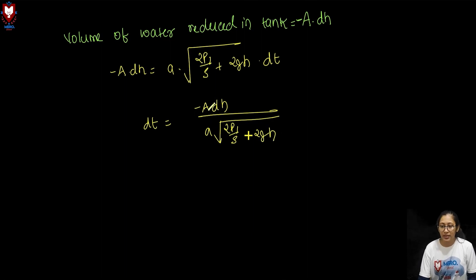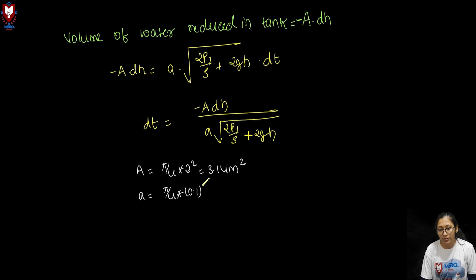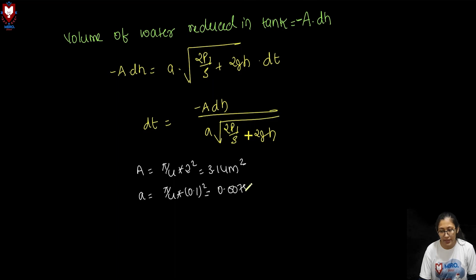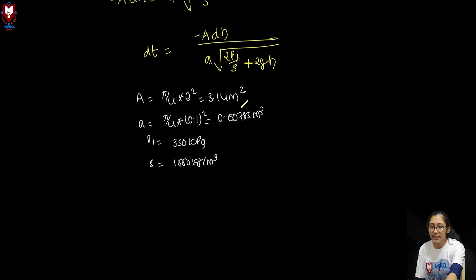Now computing the areas. Tank diameter is 2 meters: capital A = π/4 × 2² = 3.14 m². Orifice diameter is 0.1 meters: small a = π/4 × 0.1² = 0.00785 m². P1 gauge is 350 kPa = 350×10³ Pa. Water density ρ = 1000 kg/m³, and g = 9.81 m/s².